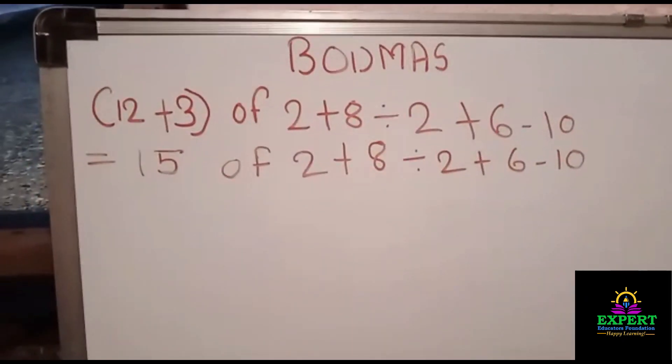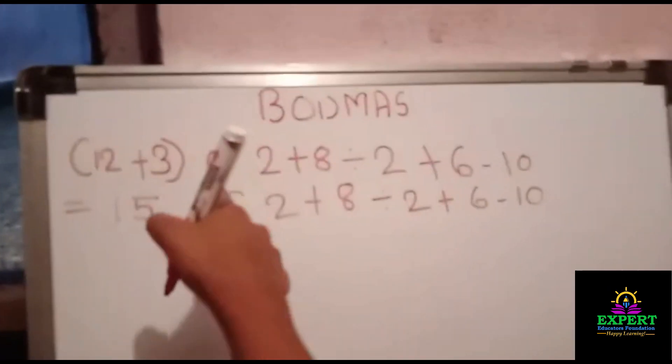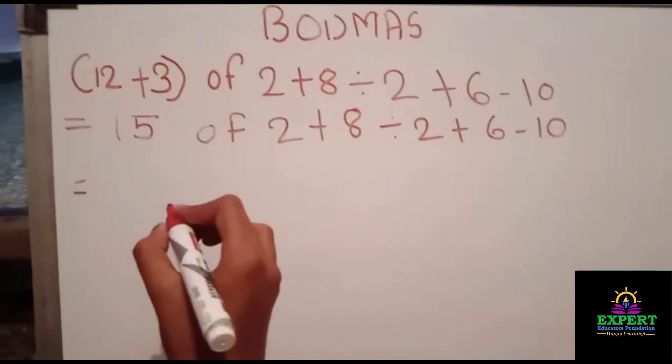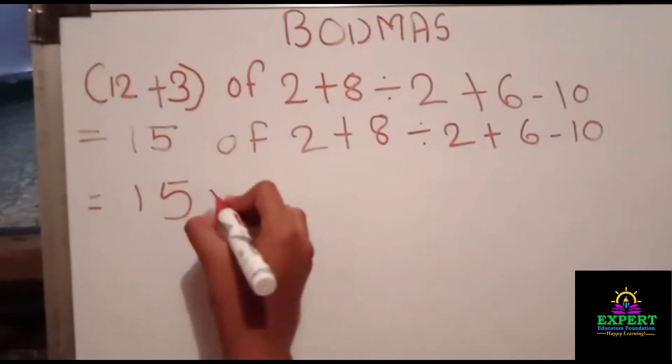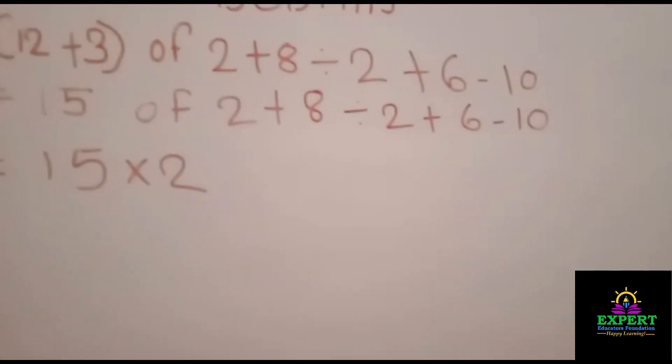So now it is time for of. Of means multiplication. So easily we will get it, 15 multiplied by 2, and as it is we will write it.